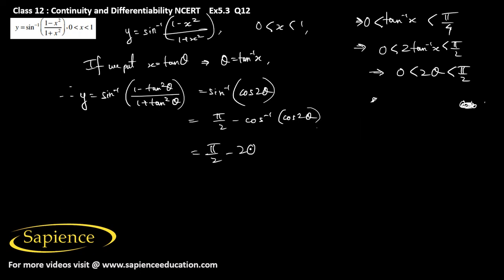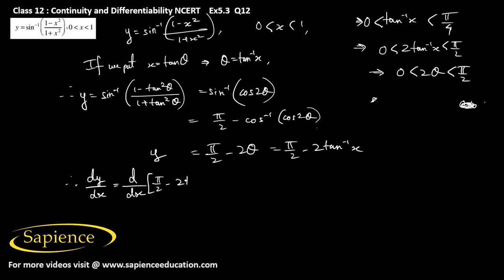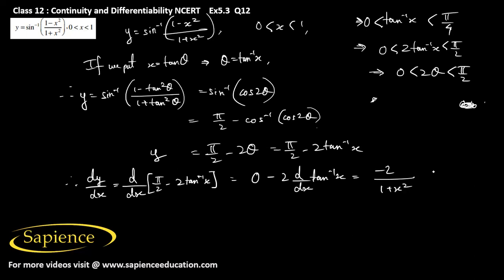So cos inverse of cos 2 theta equals 2 theta, giving y equals pi by 2 minus 2 tan inverse x. Therefore dy by dx equals d by dx of (pi by 2 minus 2 tan inverse x). Since pi by 2 is a constant its derivative is 0, so dy/dx equals minus 2 by (1 plus x square). This is the final answer.